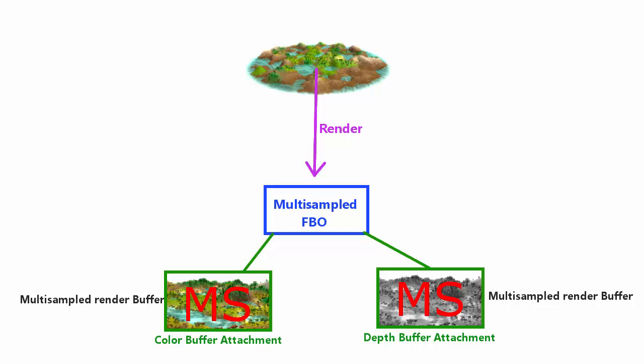The only difference is that we're going to be using multisampled render buffers as attachments. All we have to do is use the glRenderBufferStorageMultisample method instead of the usual glRenderBufferStorage method when creating the render buffer, and this method takes in one extra parameter which indicates how many samples should be used for the multisampling.